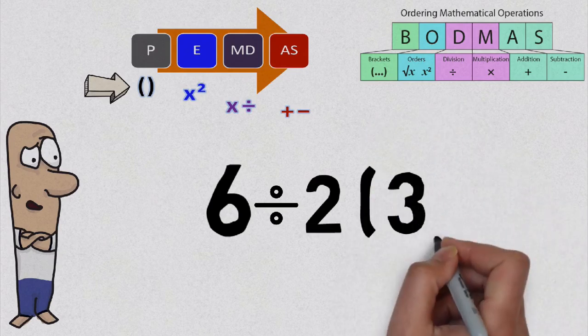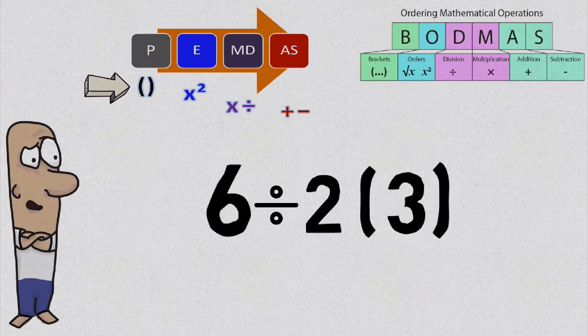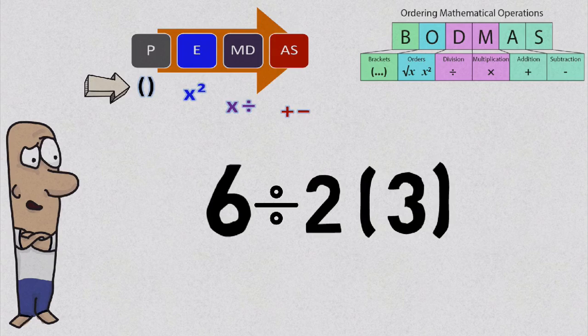Now at this point, you may think, we still have the brackets, hey? So, should I multiply 2 with 3 first? The answer is no. We evaluate what was within the brackets first. So, now we could rewrite our problem as...